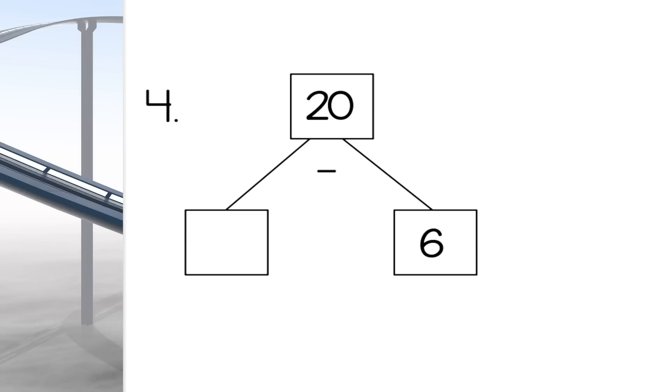Here we are subtracting, and just as we learned before, we can find one of the addends by subtracting the total from the other addend. So what is 20 subtract 6? The answer is 14! Amazing! This is awesome math!